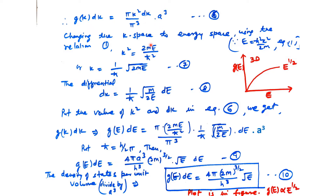We convert K-space to energy space using K² = 2mE/ℏ², giving K = (1/ℏ)√(2mE). Taking the differential, dK = (1/ℏ)√(m/2E) dE, since differentiating √E gives (1/2)E^(−1/2). Substituting the values of K² and dK into the expression, we transform G(K)dK from K-space to G(E)dE in energy space.